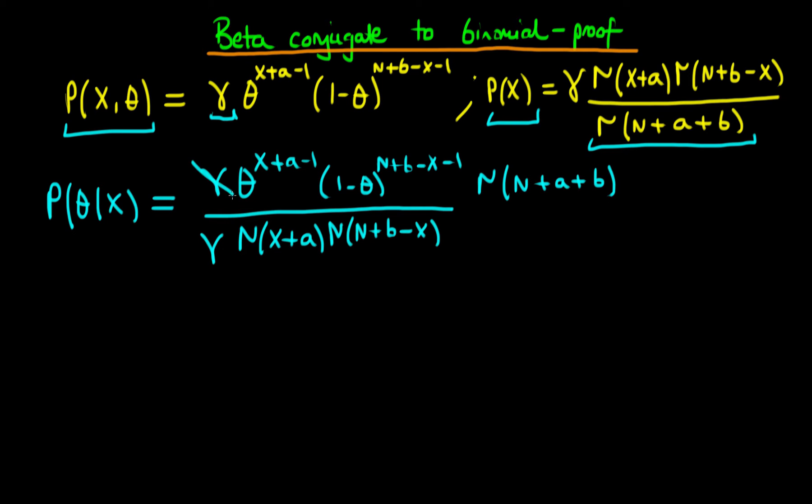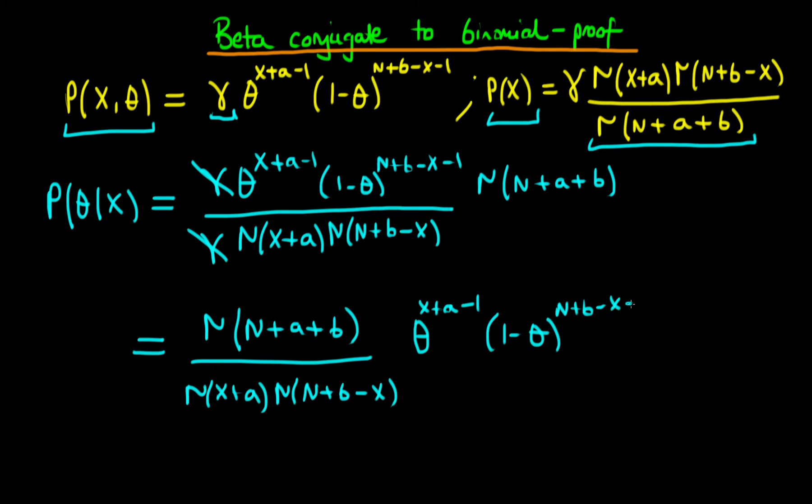We notice that the gammas, the two little gammas here, are going to cancel with one another. What we're left with is the gamma of n plus a plus b divided by the gamma of x plus a times the gamma of n plus b minus x, all times theta to the power x plus a minus 1 times 1 minus theta to the power n plus b minus x minus 1.